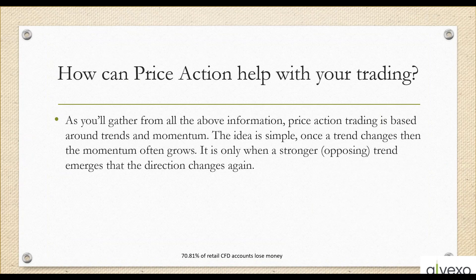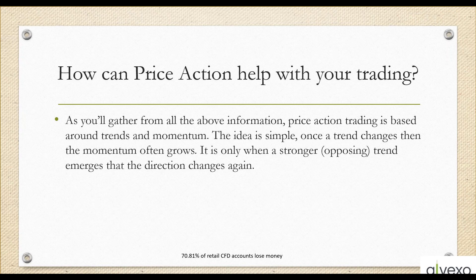Price action trading is based around trends and momentum. Once a trend changes, the momentum often grows; it's only when a stronger opposing trend emerges that the direction changes. Think of a hamster in a cage on a wheel — it takes effort to get it spinning, but once it's running, that wheel spins faster and faster. Same with the markets: once a trend starts developing it gets its own momentum, and it's harder and harder to stop. Once it reverses, you'll see the exact same thing happen as it musters momentum in the other direction.